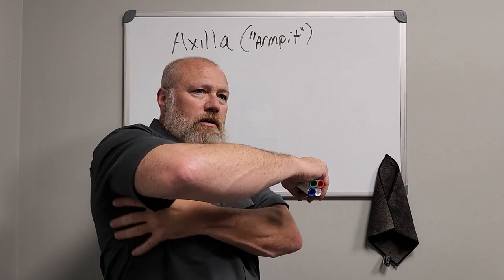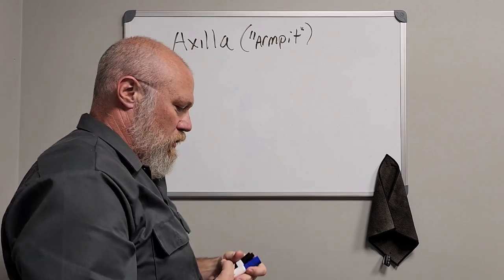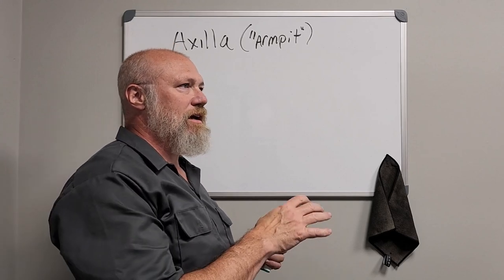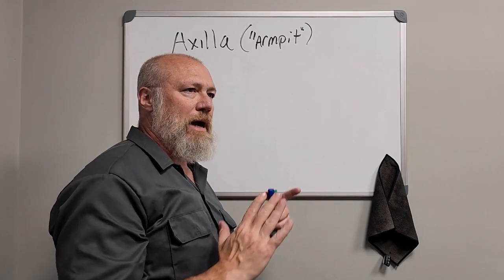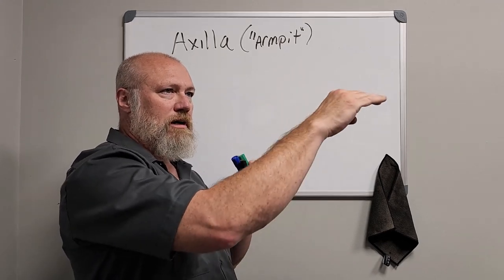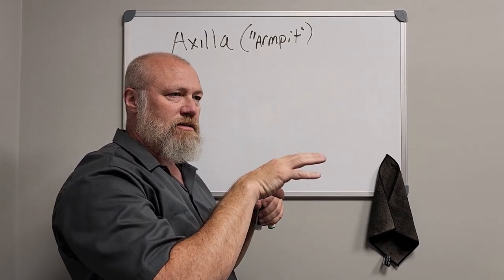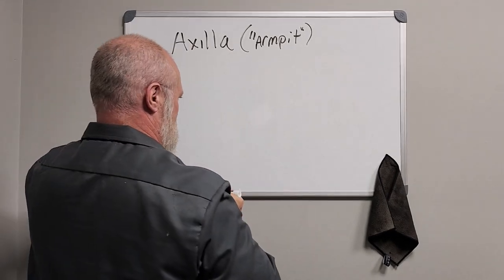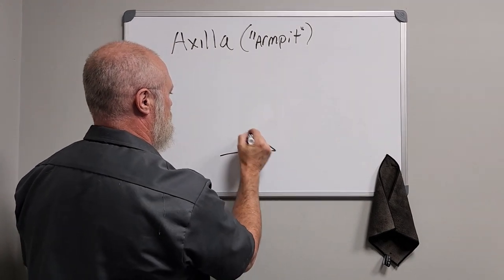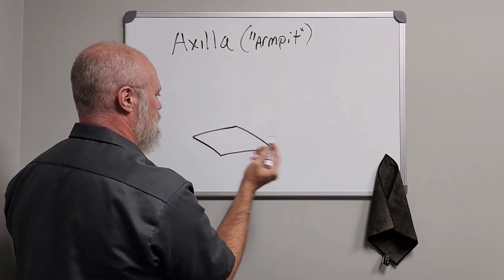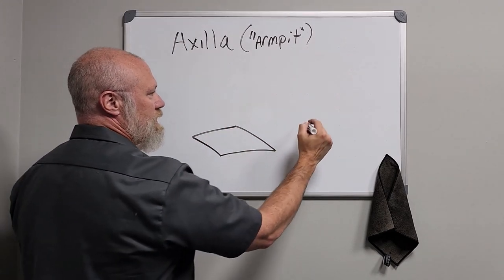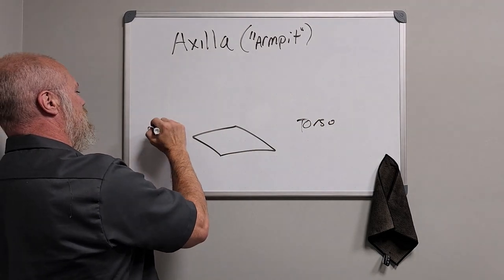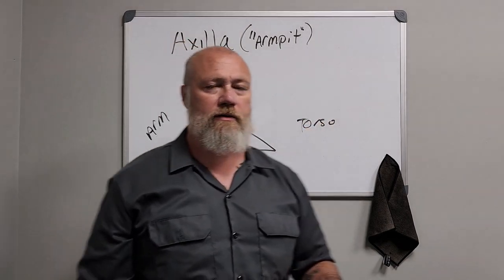It's going to be oddly shaped. We can think of it like a four-sided pyramidal structure that comes up to a triangular shaped apex, and then the floor of which is actually, let's draw it like this. This is the floor of your axilla. This will be your torso over here, and this will be the arm laterally.